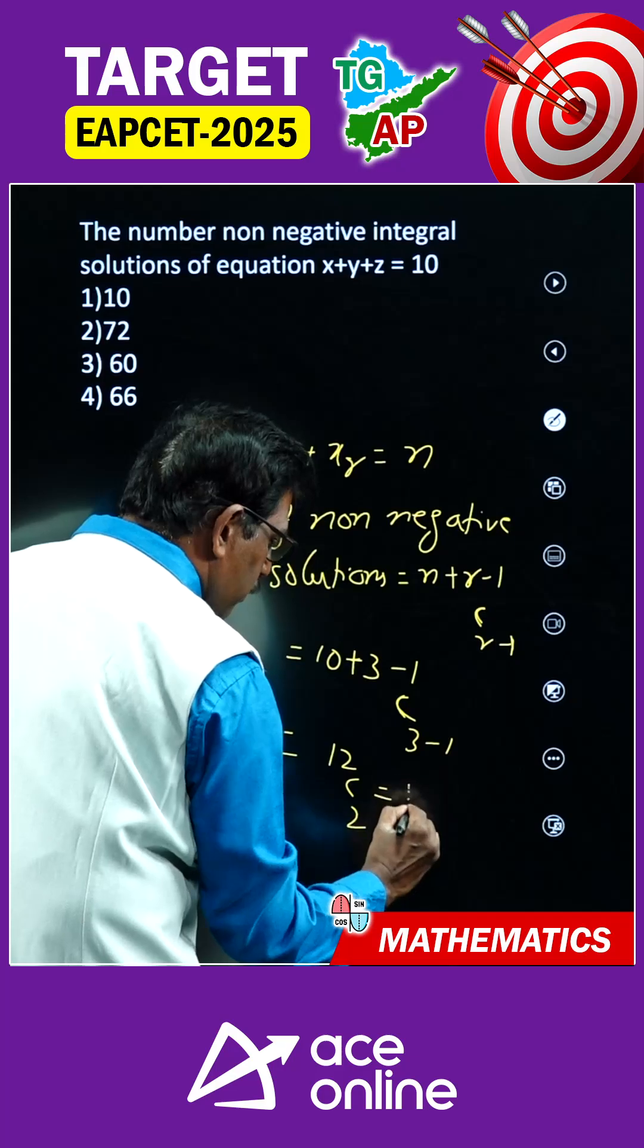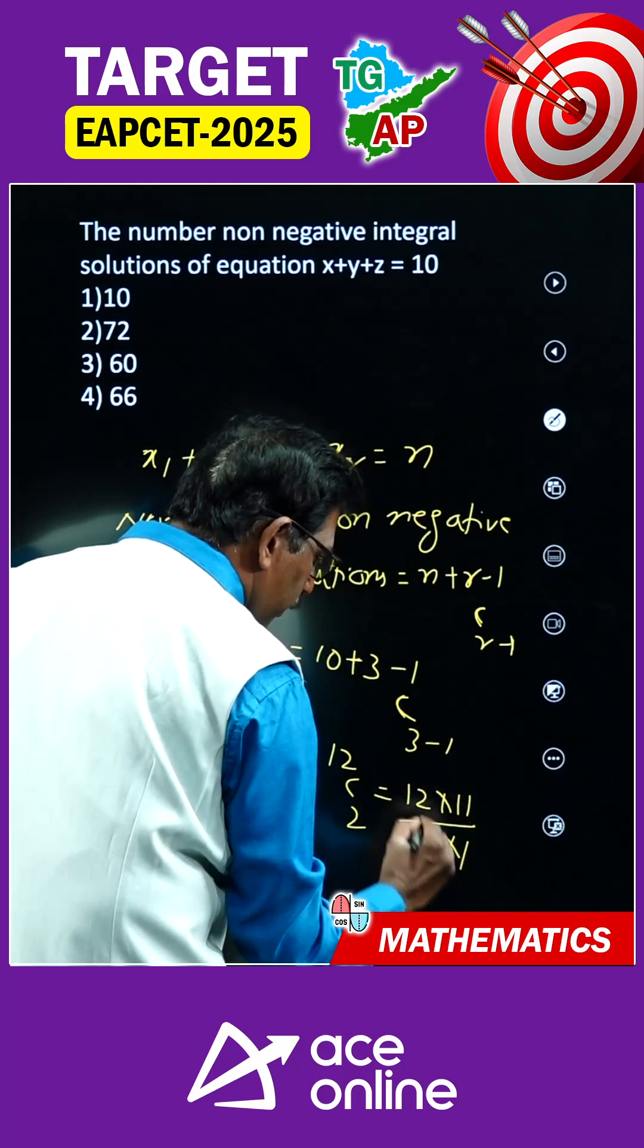12c2 value. 12c2, 12 into 11 by 2 into 1. 66.